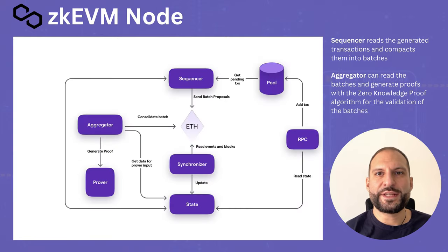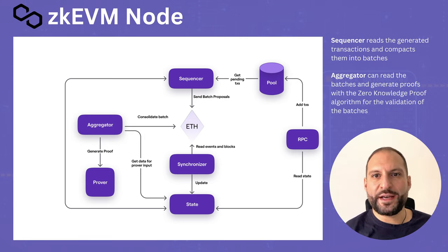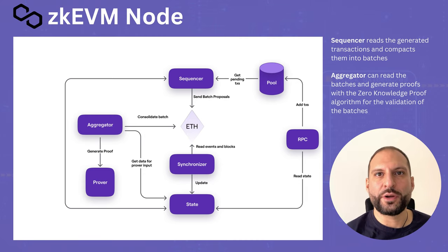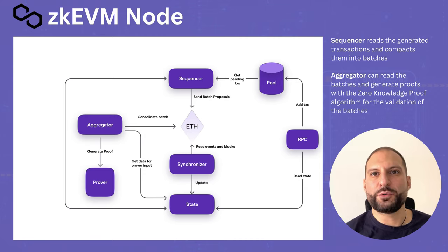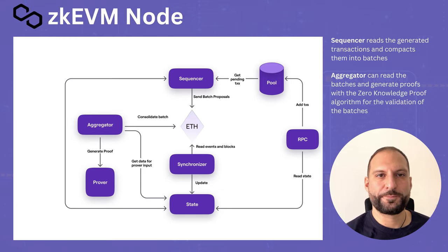Here you can see a high-level design of the zkEVM node. The most important components to look at are the sequencer and the aggregator. Now let's see how the flow to synchronize layer 2 with layer 1 works.